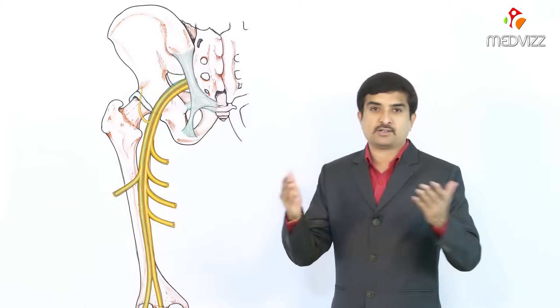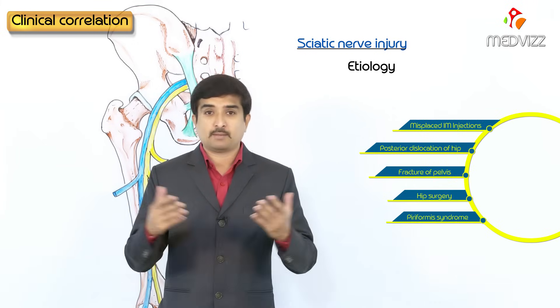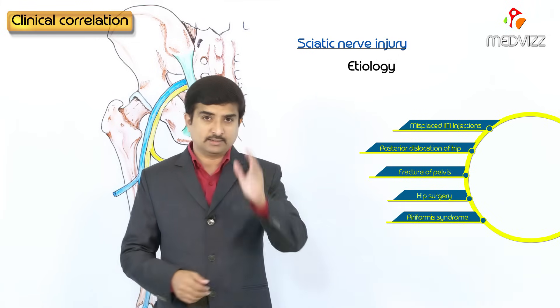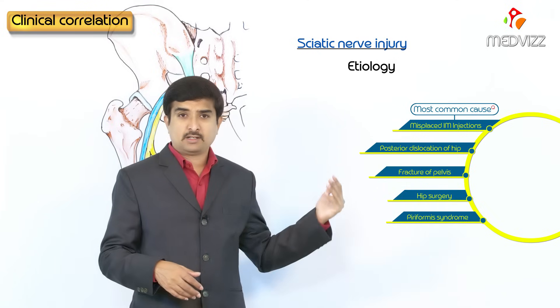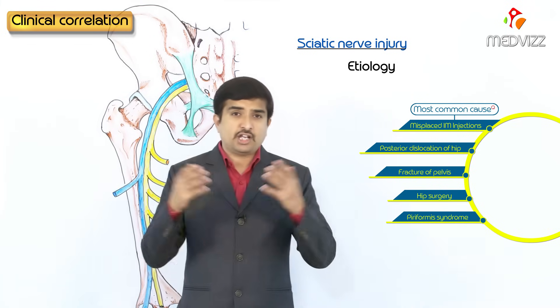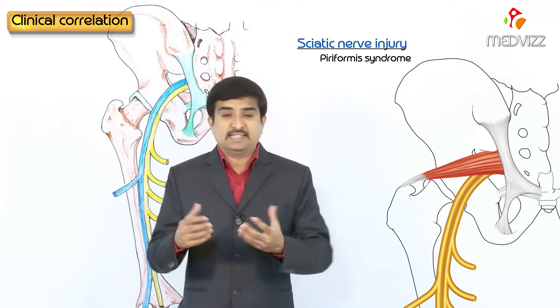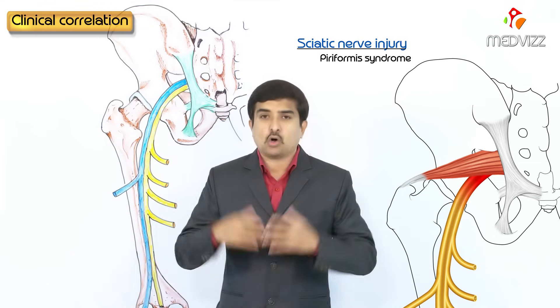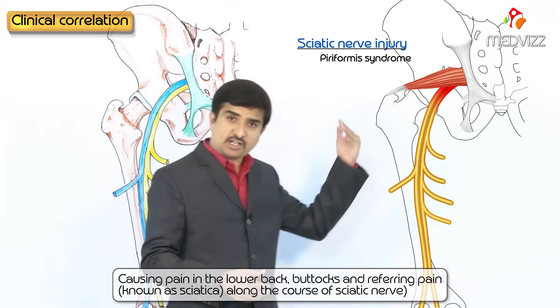Regarding the clinical correlation, the etiology of sciatic nerve injury includes: intramuscular injections in the gluteal region, which is the most common cause, as well as posterior dislocation of the hip, fracture of the pelvis, and hip surgery. A condition called piriformis syndrome occurs when the piriformis muscle irritates and causes pressure on the sciatic nerve, causing pain in the lower back and buttocks and referring pain — known as sciatica — along the course of the sciatic nerve in the posterior aspect of the thigh.